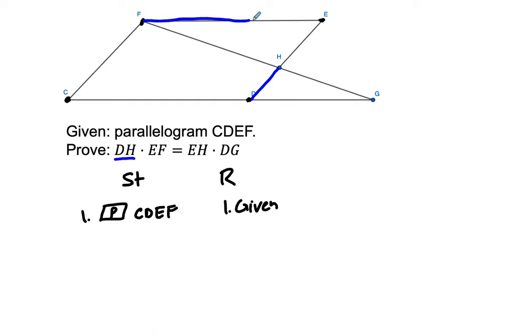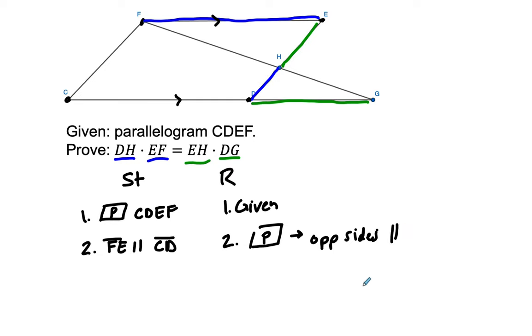And you can see, look at the side lengths we're trying to relate. Let's just kind of highlight this. So DH right here times EF. Okay. Up here has to equal EH times DG. So EH, where is that? Okay, right here times DG here. And you can see once you label that, we want to compare this upper triangle to the lower triangle. So how can we do that? Well, we're given that we have a parallelogram, right? So we know that these side lines are parallel to each other. So let's say that FE is parallel to CD.